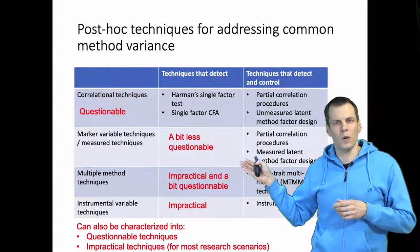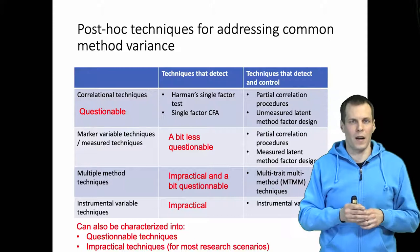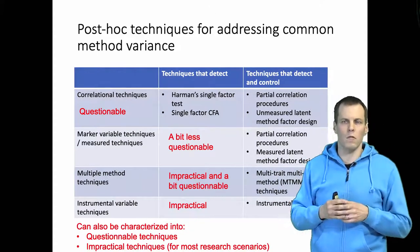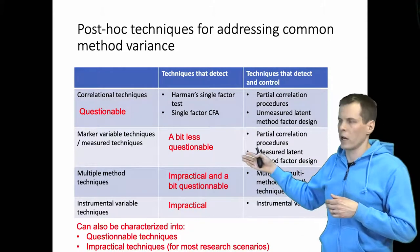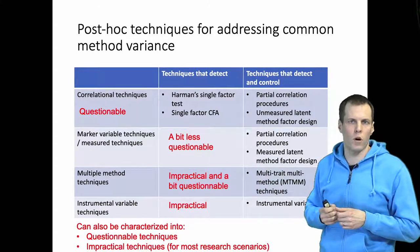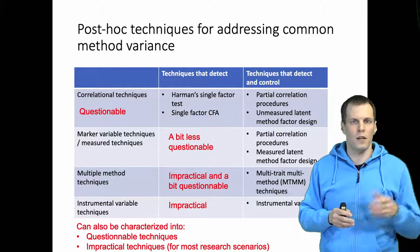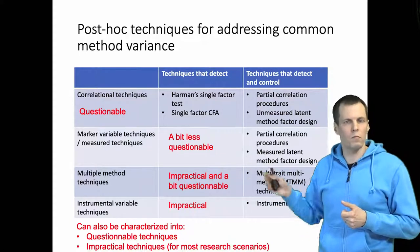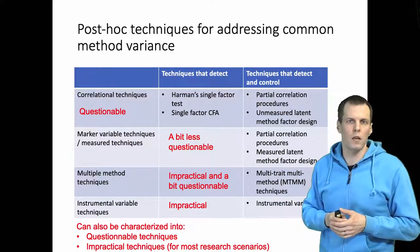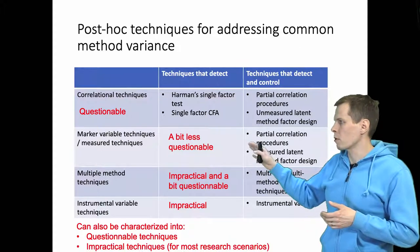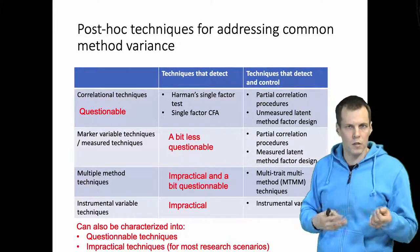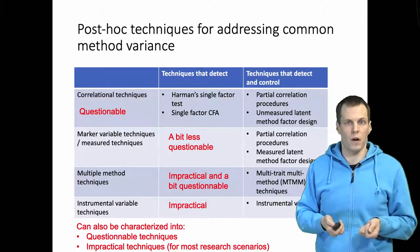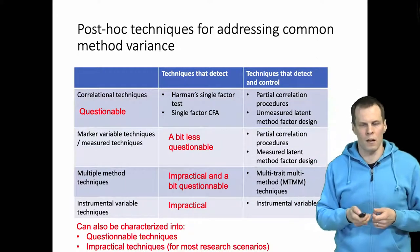Marker variables and unmeasured method variance techniques are a bit less questionable. Whether the simplistic single-factor model is appropriate can be called into question, but a more thoughtful approach — modeling different sources of bias and measuring them with direct measures or markers — may be something you can work with. However, particularly with markers, there are some issues about model identification that the literature has not really addressed so far.